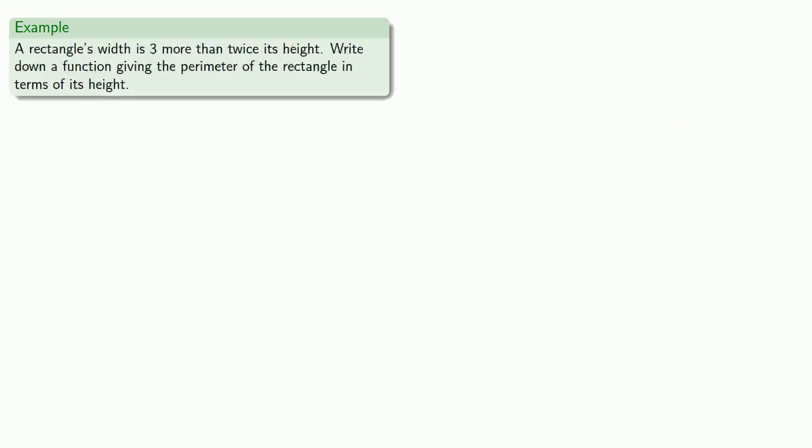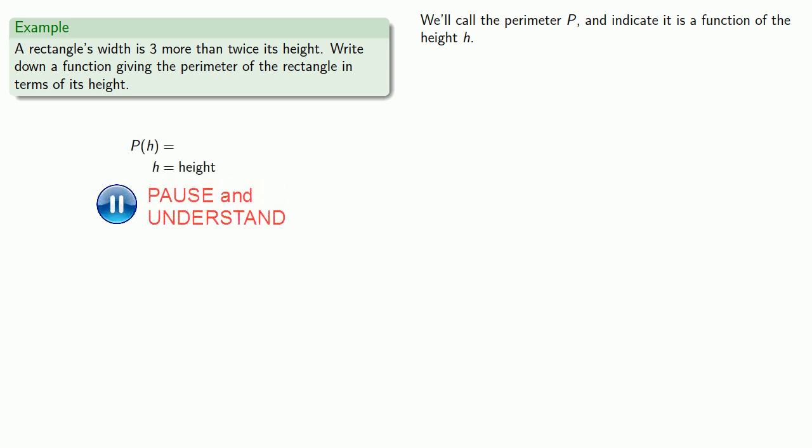Let's see how this works in a different case. Here, we want to write down a function giving the perimeter of the rectangle in terms of its height. So we'll come up with a clever name for our function. We'll call the perimeter P and indicate that it's a function of the height h. And so our function is going to be P of h, where h is the height.